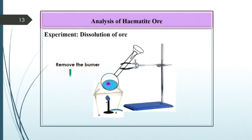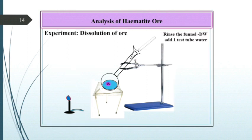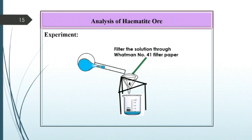Now again remove the burner and cool the solution well. After cooling the solution, rinse the funnel by using distilled water. Add about one test tube of distilled water. Now filter the solution through Whatman number 41 paper.